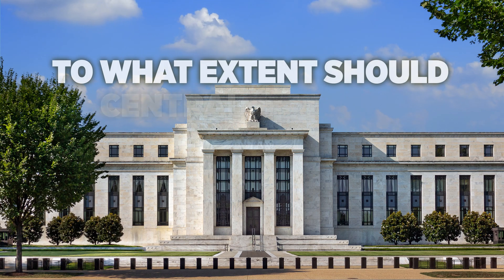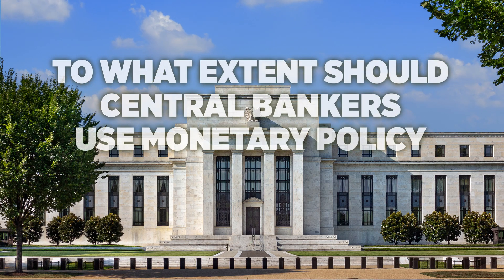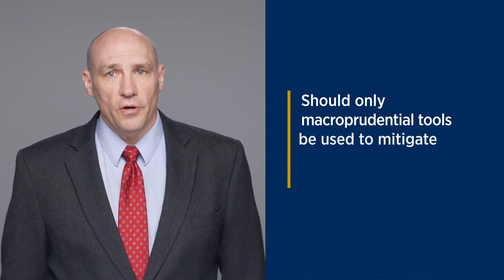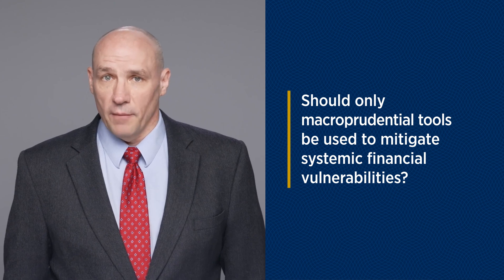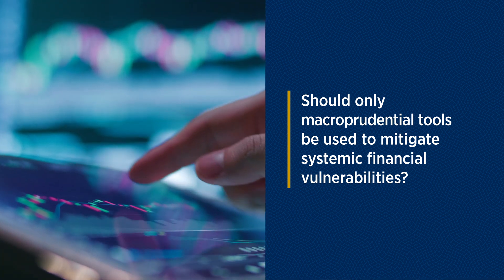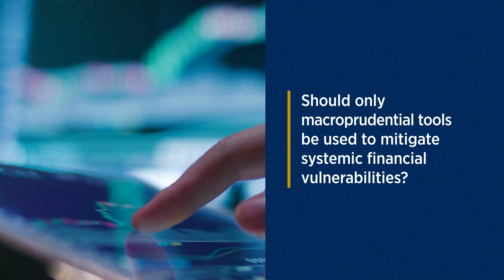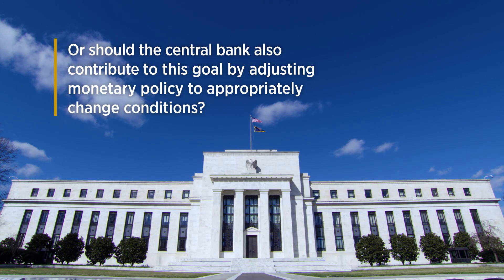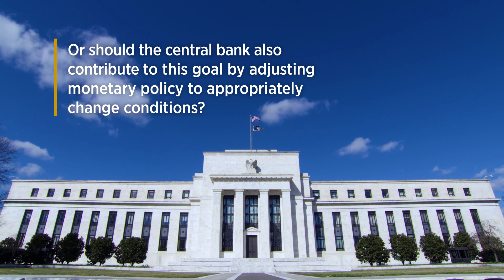The dangers posed by financial instability bring up a new question: to what extent should central bankers use monetary policy to reduce systemic financial risks? In other words, should authorities rely exclusively on macroprudential tools to mitigate systemic financial vulnerabilities, or should the central bank also contribute to this goal by adjusting monetary policy to appropriately change broad credit and financial conditions? This question is a much debated issue, with reasonable arguments for and against using monetary policy to supplement macroprudential tools.